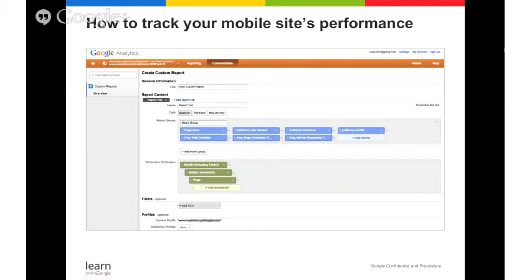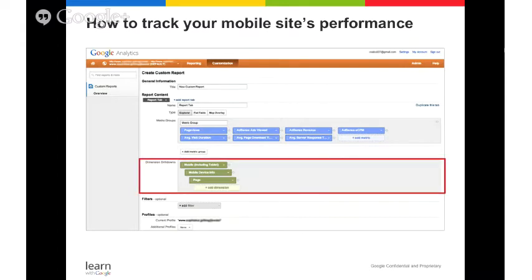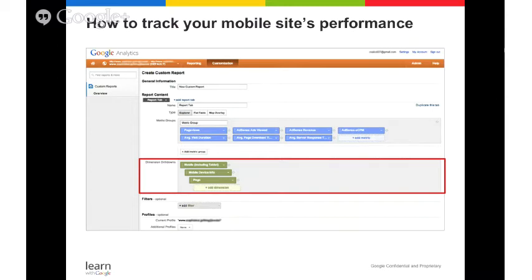To track your mobile site's performance, add mobile in the Dimension component of your custom report. You can add mobile device information such as tablet, Android, or another device type. By creating a custom report for mobile, you'll get much more detailed data than you would from AdSense alone, helping you develop a strategy for your mobile sites. I also suggest looking at average page download time and server response time, because page speed is very important to the user experience. If page download times are slow, you may want to look into this further.